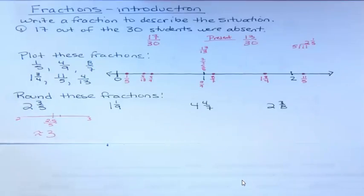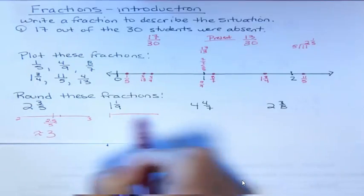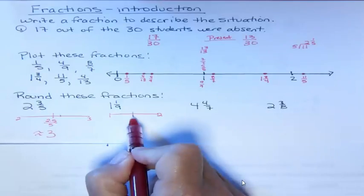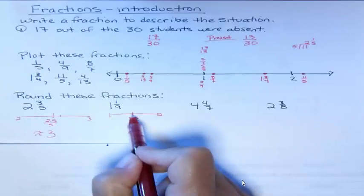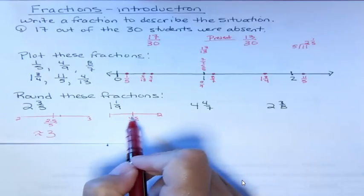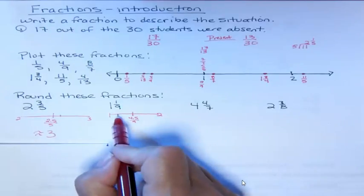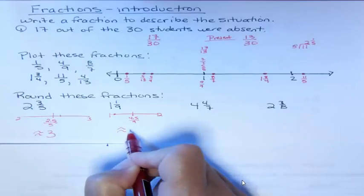What about one and one-ninth? Well, I'm interested in, is it closer to one or is it closer to two? What would halfway be for ninths? Half would be four and a half out of nine. That would be exactly half between those numbers, and if it was exactly half, we would go up. If it's exactly half, you go up. But this is definitely less than somewhere over here, so we're going to go down and say one and one-ninth is approximately one.